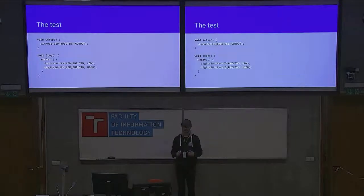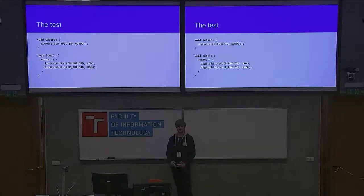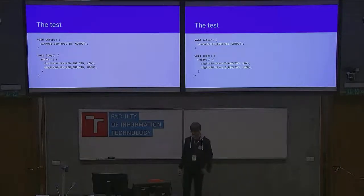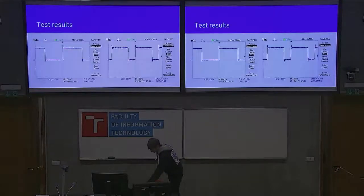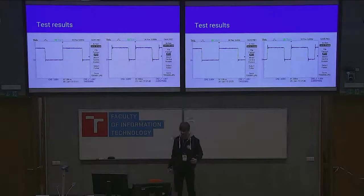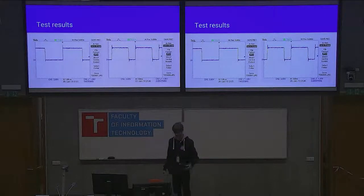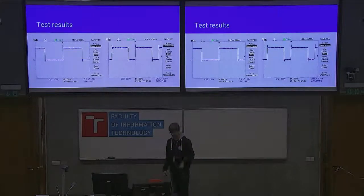I implemented an LLVM pass that removes the calls to the function digitalWrite and translates them at compile time. For testing I used a simple program which blinks the built-in LED at maximum speed. When you measure the frequency using an oscilloscope, you can see that with the original function from the Arduino Wiring library, the frequency is around 144 kilohertz, while with my optimization the frequency is about 2 megahertz.